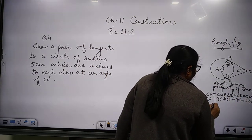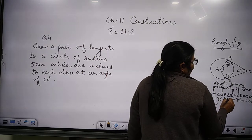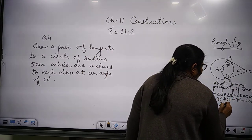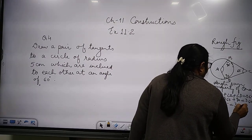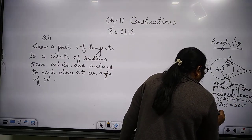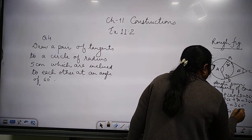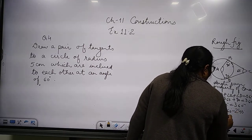So angle A plus 90 plus 60 plus 90, that's 240, equals 360 degrees. So angle A is 360 degrees minus 240 degrees, that is 120 degrees.